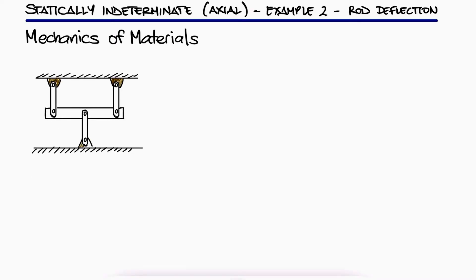Three steel rods support an 8.5 kip load P. Each of the rods AB and CD has a 0.32 square inch cross-sectional area, and rod EF has a 1 square inch cross-sectional area.